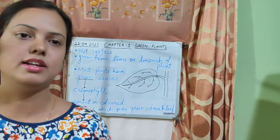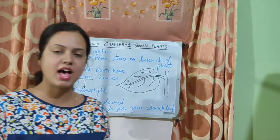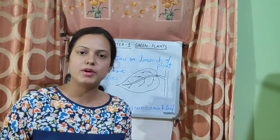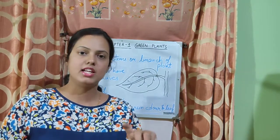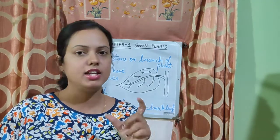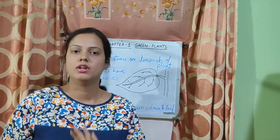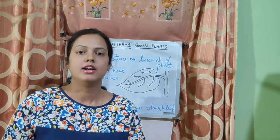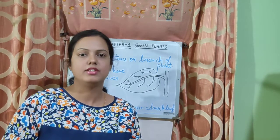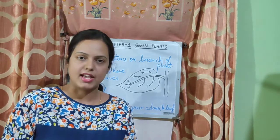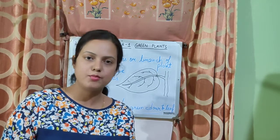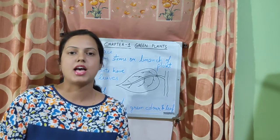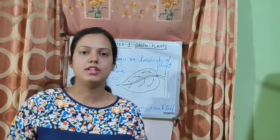Now, do all the plants have the same type of leaves — one type, one size, one shape, one color? No. All plants do not have the same type of leaves. Different plants have different types of leaves. The leaves' size will differ, the leaves' shape will differ, the leaves' color will differ. Different plants have different shape, size and color of leaves.